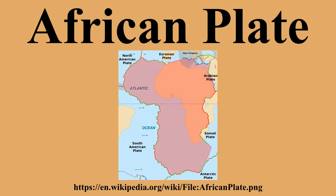The cratons were widely separated in the past, but came together during the Pan-African Orogeny and stayed together when Gondwana split up. The cratons are connected by orogenic belts, regions of highly deformed rock where the tectonic plates have engaged. The Saharan metacraton has been tentatively identified as the remains of a craton that has become detached from the subcontinental lithospheric mantle.